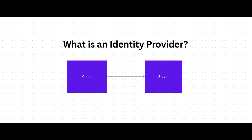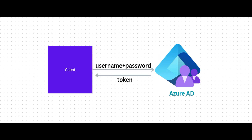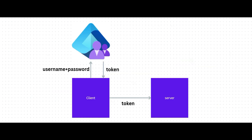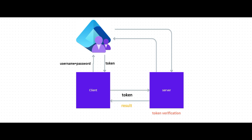In our case, we use Azure Active Directory or Entra ID as an identity provider. The client first sends a login request to Azure AD with a username and password. Azure AD validates those credentials, and if correct, returns a token back to the client. A token is a secure unique identifier that replaces sensitive information like a password — it's a way of saying yes, this user is verified. The client then uses that token for all further requests to the server, and the server verifies the token with Azure AD to ensure it's valid. Once validated, the server allows access and sends back the final response.